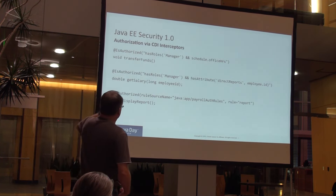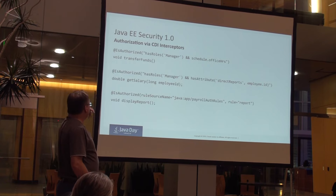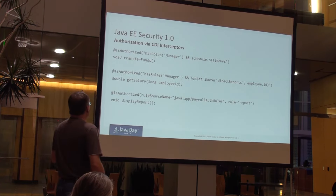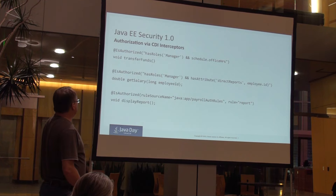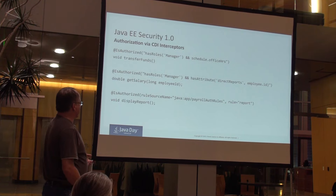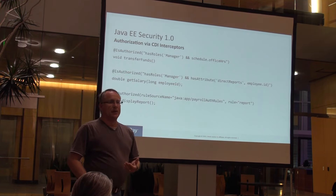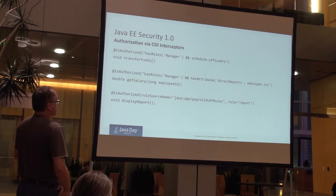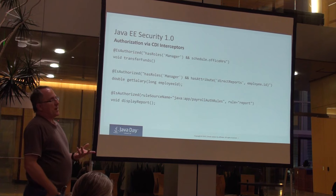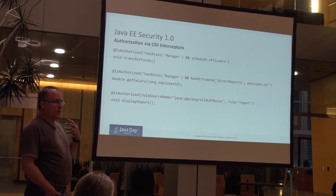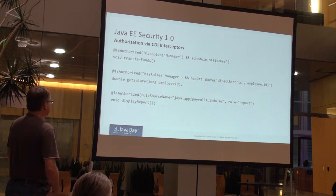In the next example, there's additional context — it's also contextual. We'll let you call getSalary if the caller is in the role of manager and that employee is a direct report for that manager. Java EE really is becoming more and more just a POJO model that uses annotations to declare what you want.